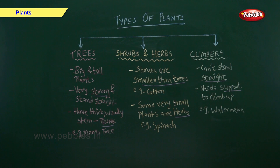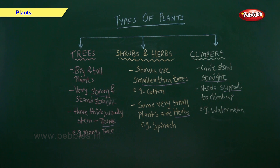Second, shrubs and herbs. Shrubs are smaller than the trees. Example of shrub is cotton. Some plants are very small — they are known as herbs. Example of herbs is spinach. Third, climbers. Climbers cannot stand straight. They need support to climb up. Example of climbers is watermelon and grapes.